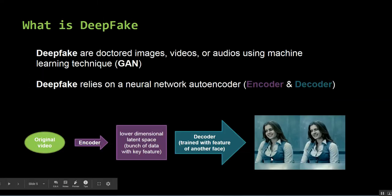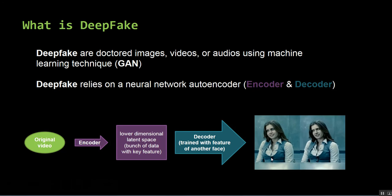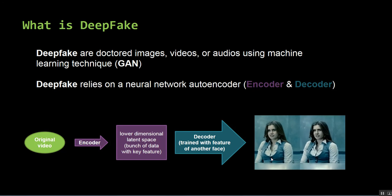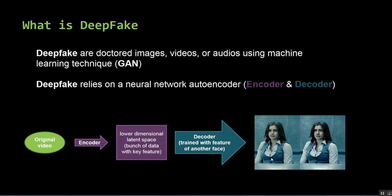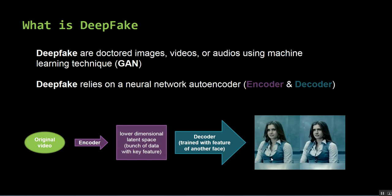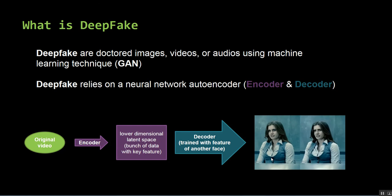Moving on to our next slide: what is deepfake? According to Wikipedia, deepfakes are synthetic media in which a person in an existing image or video is replaced with someone else's likeness. So basically these are just doctored images, videos or audios using the machine learning technique GAN, and it heavily relies on the neural network autoencoder.